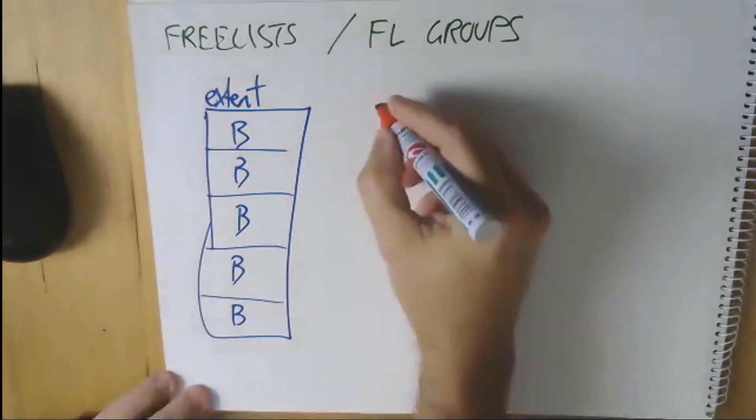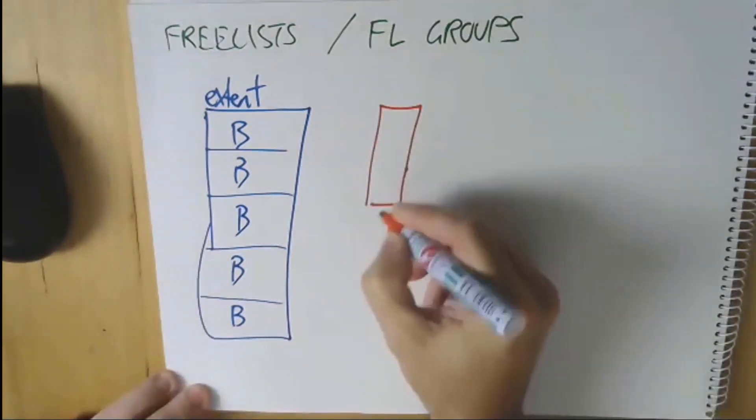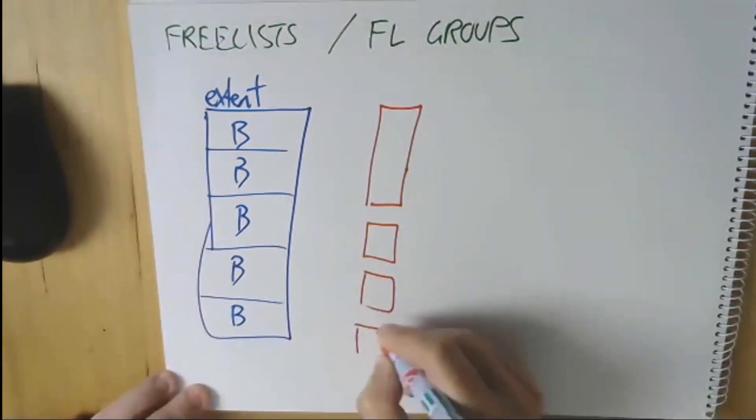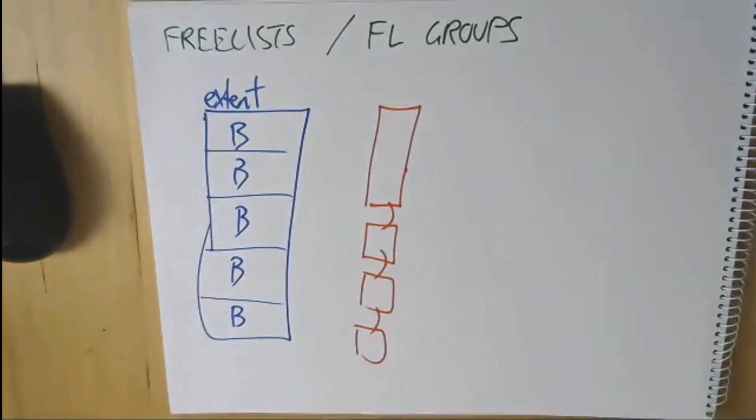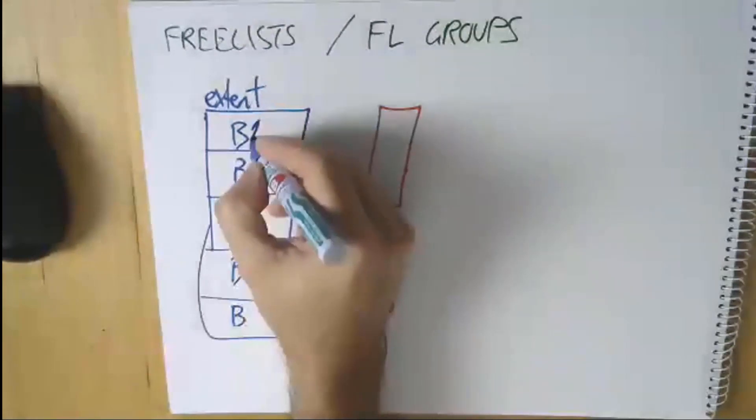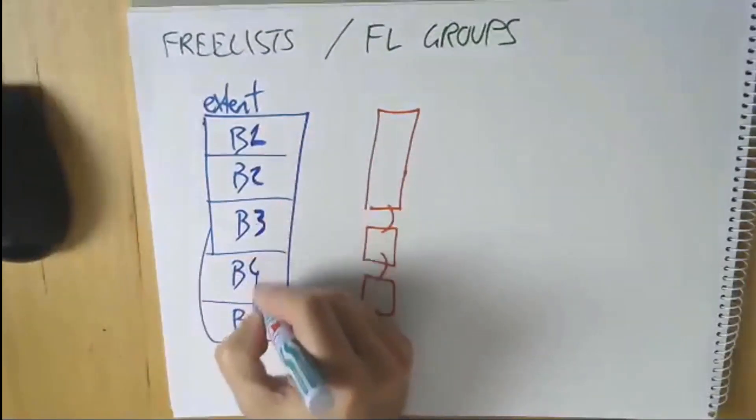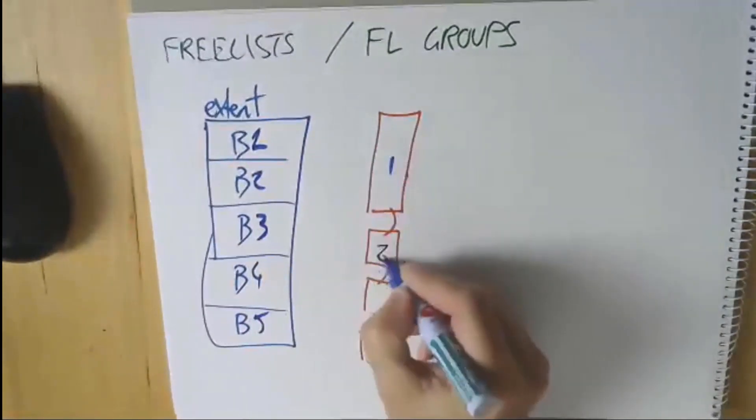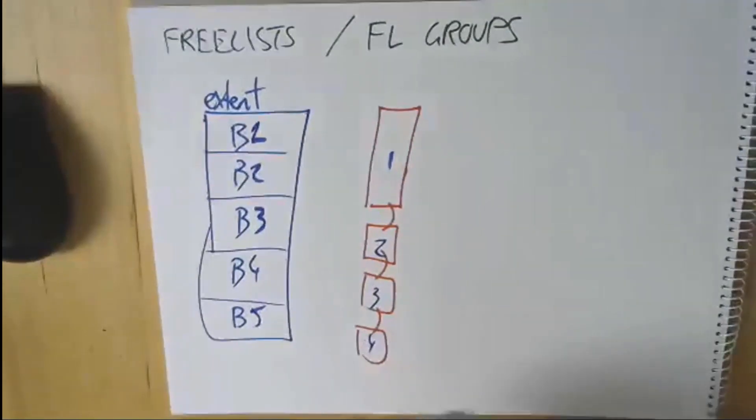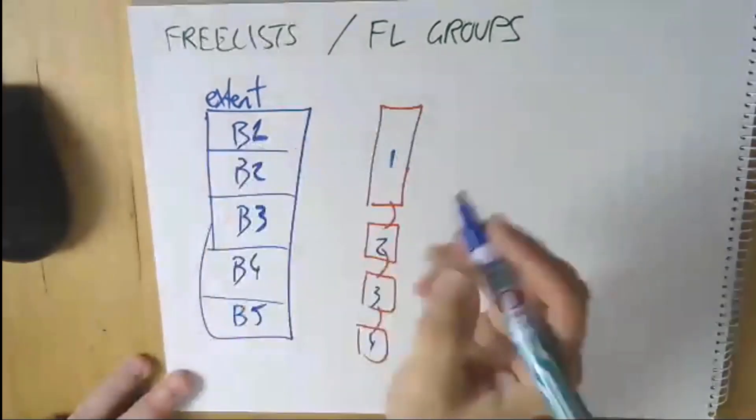Obviously, these blocks start off as all being empty. The database needs to know what blocks can be used as data starts coming in. We used to manage this with a thing called a freelist. That was effectively information that stored what blocks were available. So there's B1, B2, B3, B4, and B5. The freelist would say, yep, we got one, two, three, four, and five.